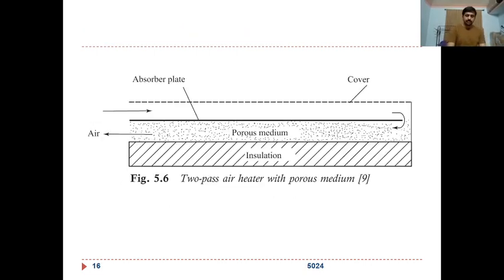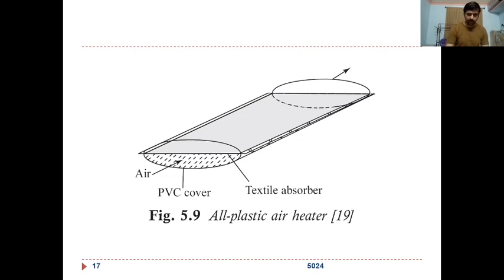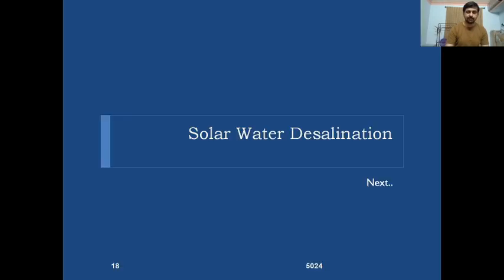In summary, solar air heaters are devices to heat air, with two classifications: based on the number of air channels (air flow configuration) and based on the air channel design. There is also a newer category — plastic air heaters — where textile absorbers and PVC covers are used instead of glass and metal parts. That concludes the topic of solar air heaters; in the next class, we will discuss how to desalinate water using solar energy.